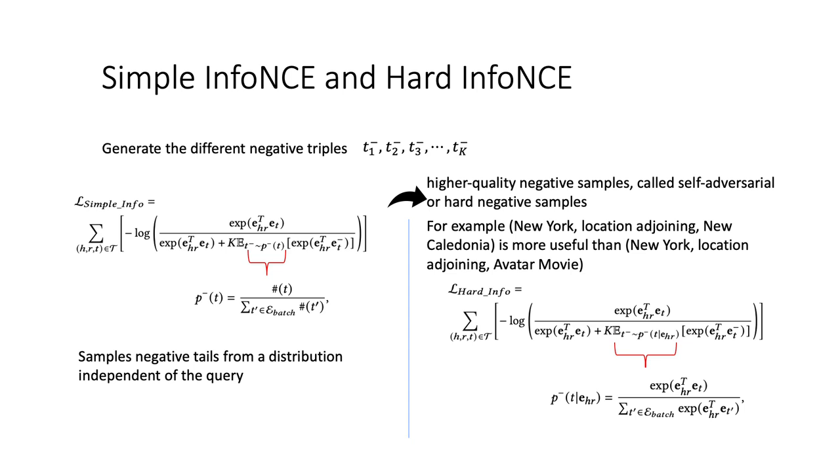However, simple InfoNCE is not efficient since the negatives are randomly chosen and independent of the query. Good quality negatives are more useful to learn the embeddings. For example, New York location adjoining New Caledonia is more useful than New York location adjoining Avatar Movie.